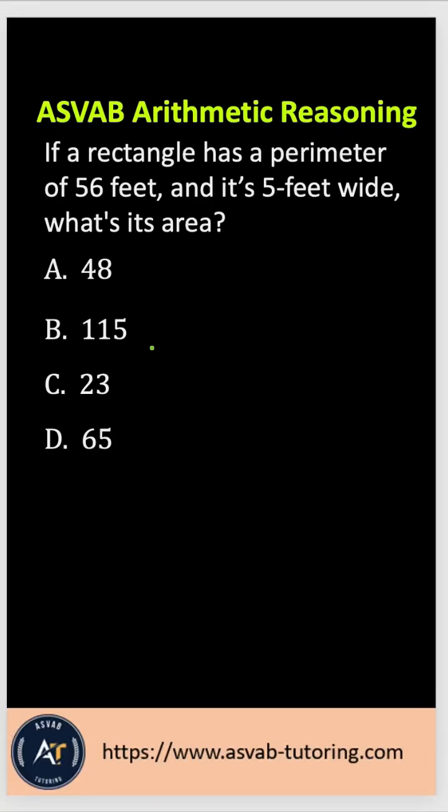Hi everyone, let's practice another arithmetic reasoning problem you might see on the actual ASVAB test. The problem says: if a rectangle has a perimeter of 56 feet and it's 5 feet wide, what is its area?